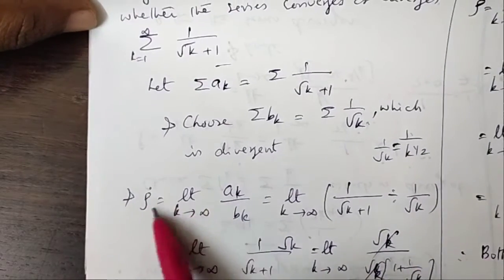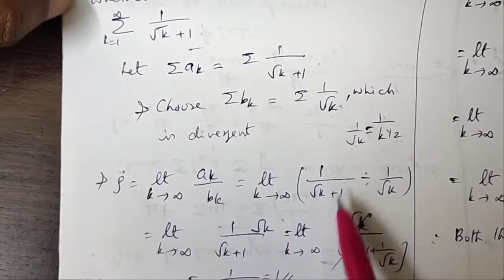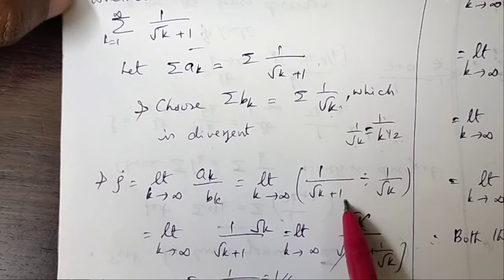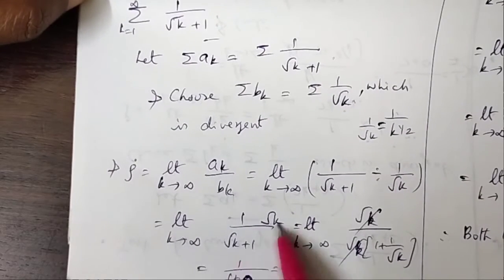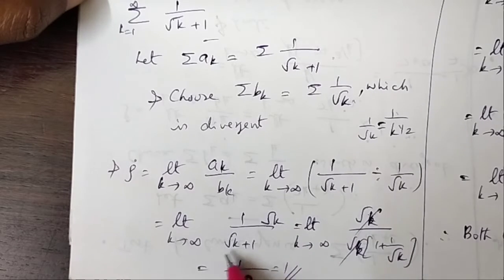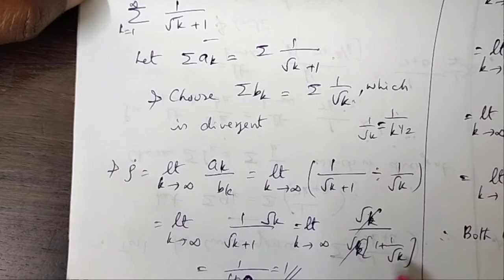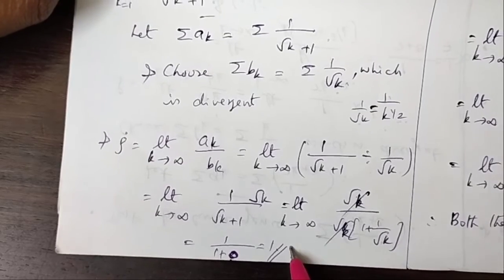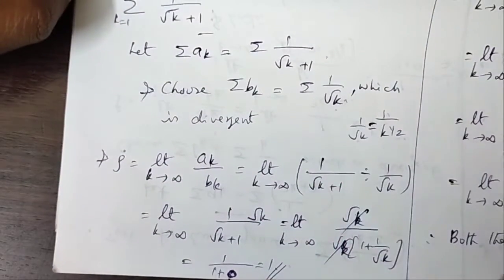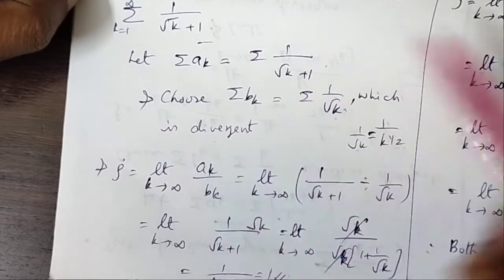Now find ρ: limit as k→∞ of ak/bk = limit of [1/√(k+1)] ÷ [1/√k] = limit of √k/√(k+1) = limit of 1/√(1 + 1/k). As k→∞, 1/k→0, so ρ = 1. This is finite and positive, so both series behave the same. Since bk is divergent, the given series is also divergent.